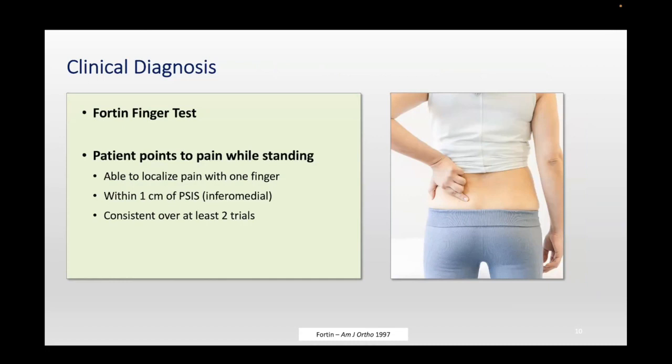Typically, patients try to make a big circle and say it's all around here. If you ask them to be more specific — what hurts when you put weight on that side, going downstairs, getting out of a car — and they point to a spot about a centimeter inferomedial from the PSIS, that's called the Horton test and is pretty specific. We do see this in clinical practice.